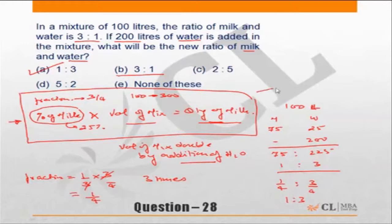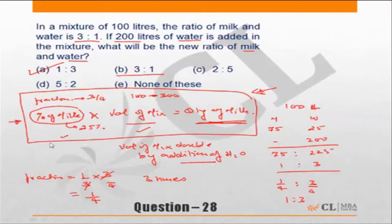The key concept: quantity of milk remains constant, so whatever happens to the volume of the mixture, the reciprocal will happen to the fraction of milk. For example, if the volume of mixture became 5/4 times, the fraction of milk would become 4/5 times. This is the part you need to remember.